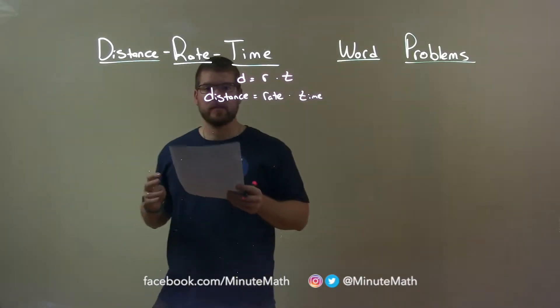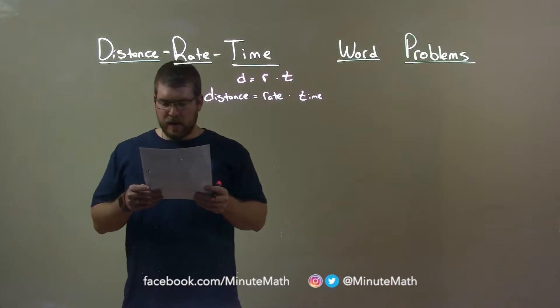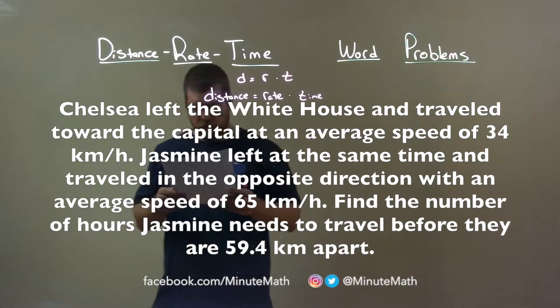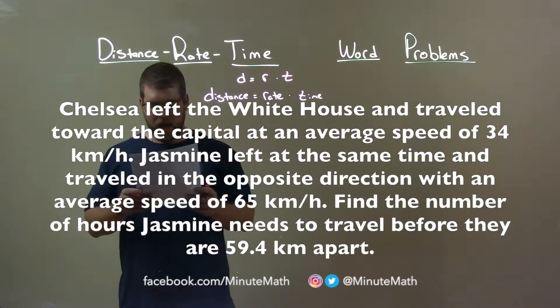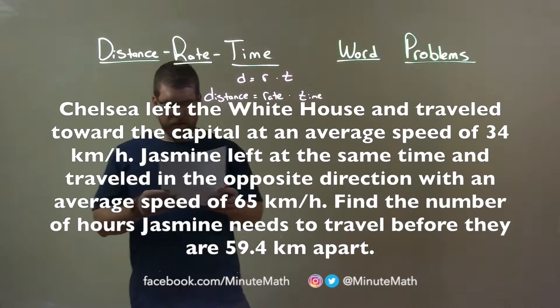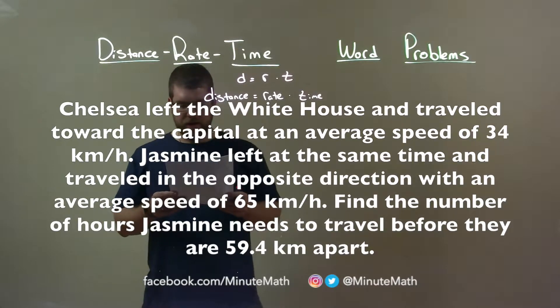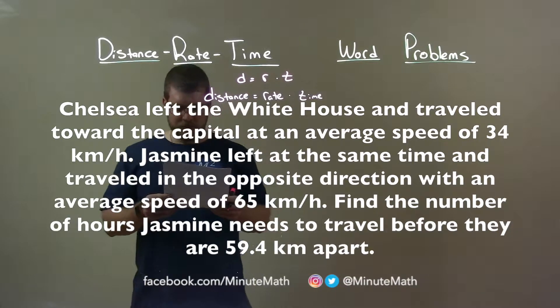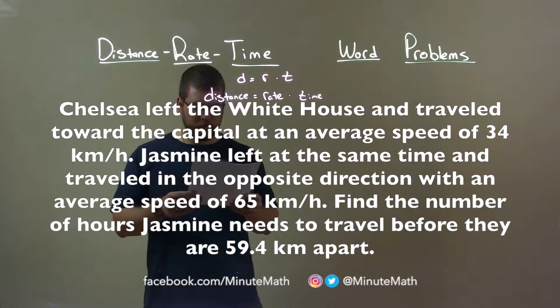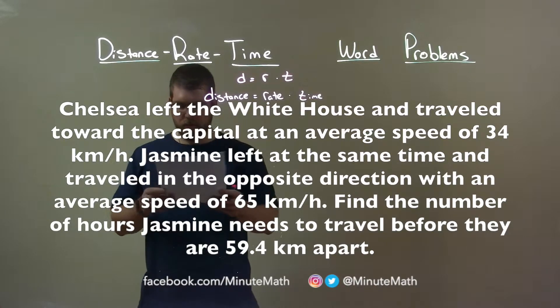If I was given this word problem: Chelsea left the White House and traveled towards the capital at an average speed of 34 km per hour. Jasmine left at the same time and traveled in the opposite direction with an average speed of 65 km per hour. Find the number of hours Jasmine needs to travel before they are 59.4 km apart.